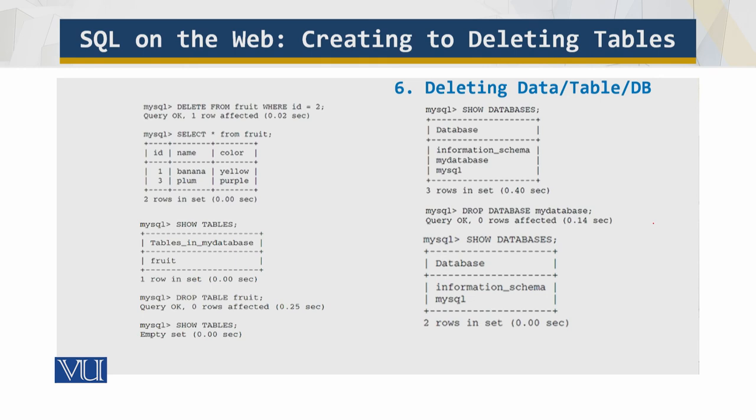Now we created the table, added data, inserted, looked at the data. Now we want to delete data from the table or the database. So I say DELETE FROM this fruit table WHERE ID is equal to 2. You see now 2 is gone.